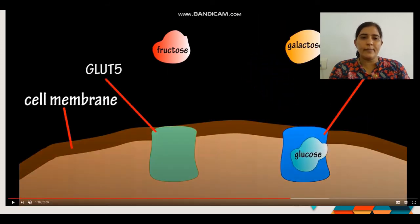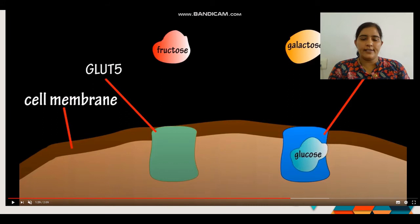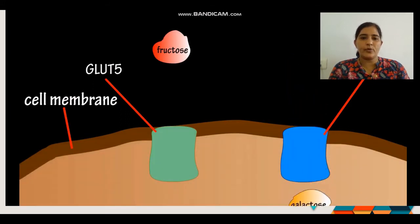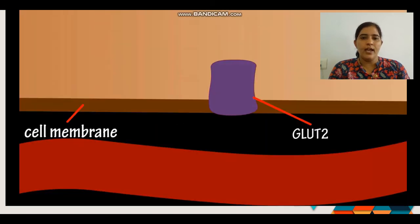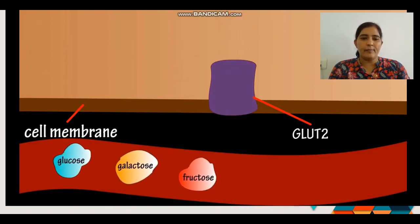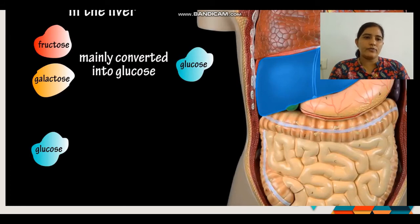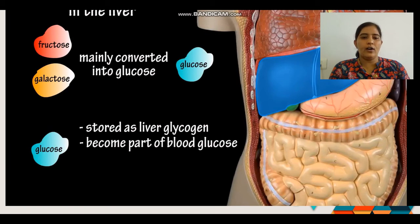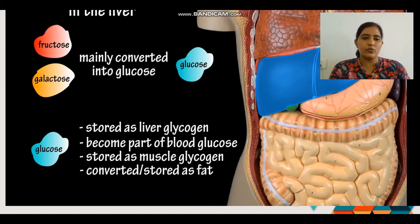After digestion, these monosaccharides pass through the cell membrane and are transported into the cells via protein transporters. GLUT-5 transports fructose, while GLUT-2 transports glucose and galactose into the cells. Glucose is stored as liver glycogen and muscle glycogen, and excess glucose can also be stored as fat in the liver.